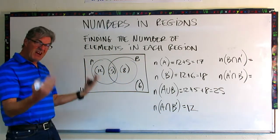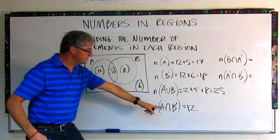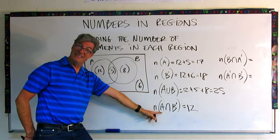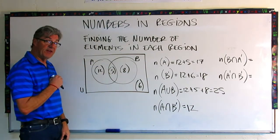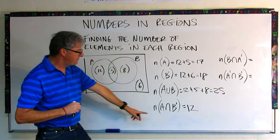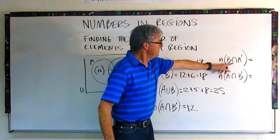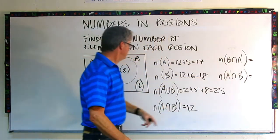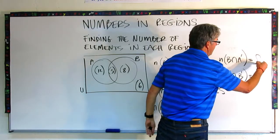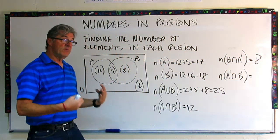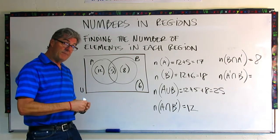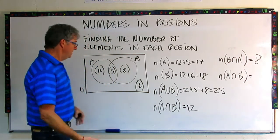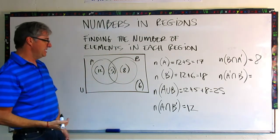The complement of B is everything outside of B, and we're intersecting that with what is in A — so only that one section, which is 12. The next one is the opposite: the number of elements in B intersected with the complement of A. That means what's in B that's not in A, which is 8. And lastly, the number of elements in the intersection of the complements of both A and B — elements in neither set — that's the outside region: 6.